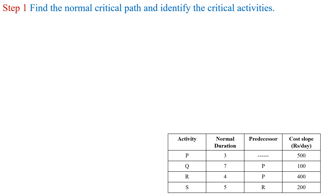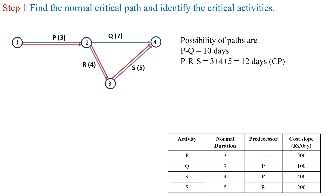Step 1 is to find the normal critical path and identify the critical activities. This is the network diagram for the given activities. The possible paths are P-Q and P-R-S. The duration for path P-Q is 3 plus 7, that is 10 days. The duration for path P-R-S is 3 plus 4 plus 5, equal to 12 days.